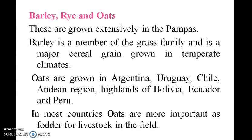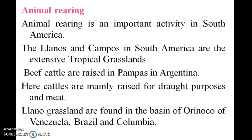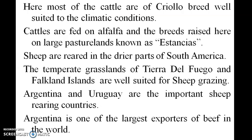Barley, rye, and oats are important crops in Argentina, Uruguay, Chile, the Andean region, the highlands of Bolivia, Ecuador, and Peru. Animal rearing is also important. Beef cattle are raised in the Pampas in Argentina, mainly for draft purposes and meat. Most cattle are of the Criollo breed, well suited to local climate conditions.